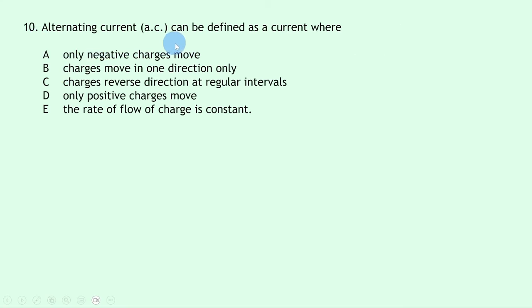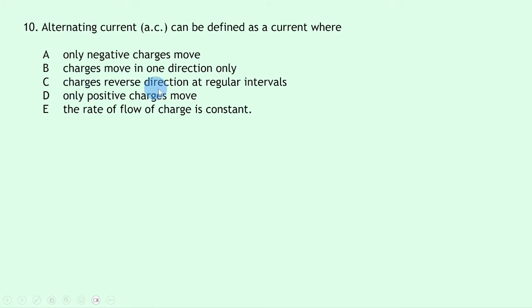Question 10 asks for the definition of alternating current AC. Direct current DC is where charges move in one direction only, so we can rule out B. Alternating current is where electrons change direction every fraction of a second — a continuous back-and-forth flow. The option that matches is C: charges reverse direction at regular intervals.